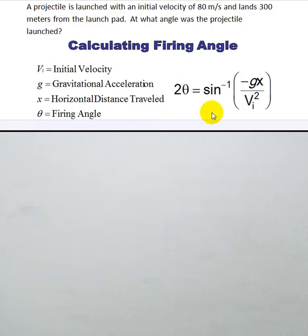Here is our formula on the right side that shows how we are going to calculate the angle at which the projectile was launched. It is really important that you notice that when we find this, when we do the math on the right side of the equation, we are going to end up finding twice the angle.